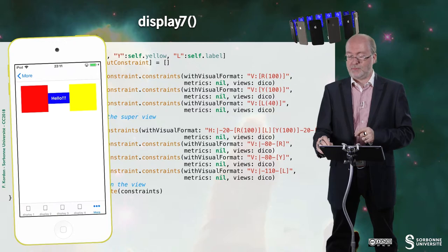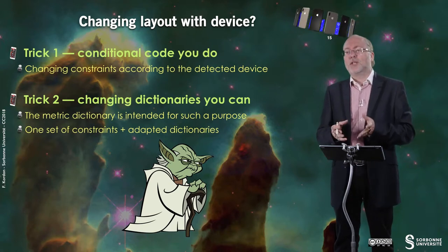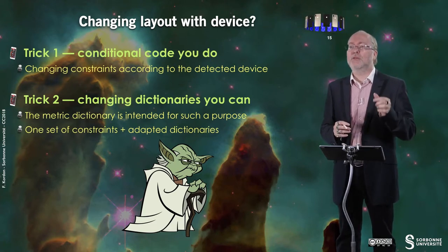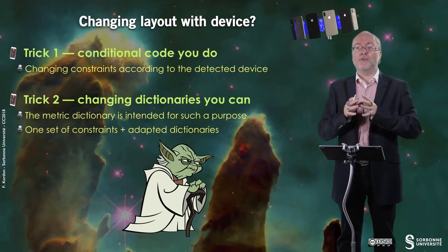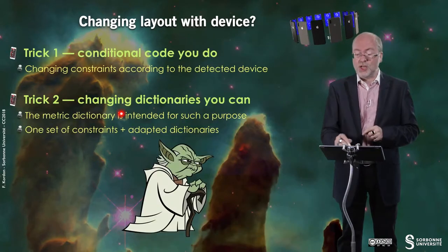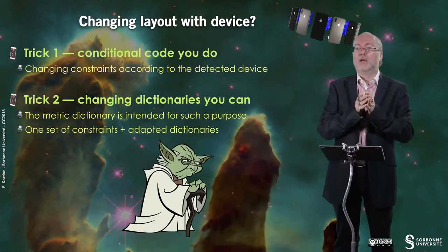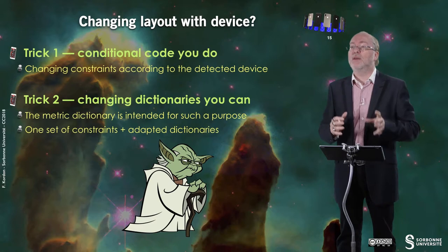Let's have a few tricks. How can you change the layout per device? Trick one by Master Yoda: conditional code. You can change the constraints according to the selected device. But there's another trick — you can keep the same constraints but only change the dictionaries, in particular the metrics dictionary, where you associate real values to symbolic values. You can have the same set of constraints and adapted dictionaries for various types of devices.